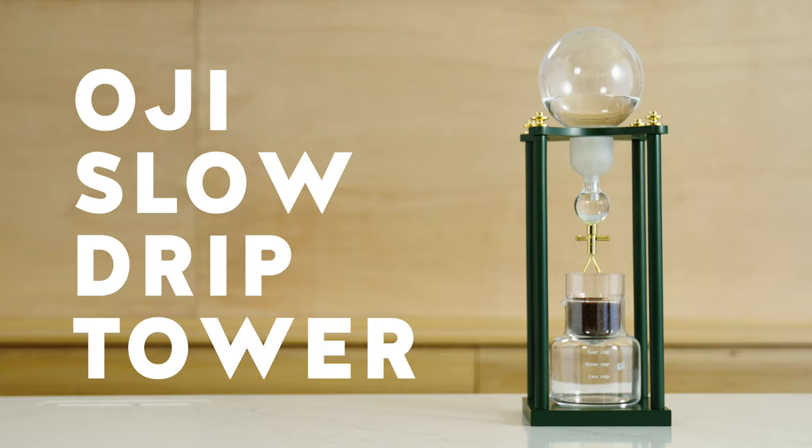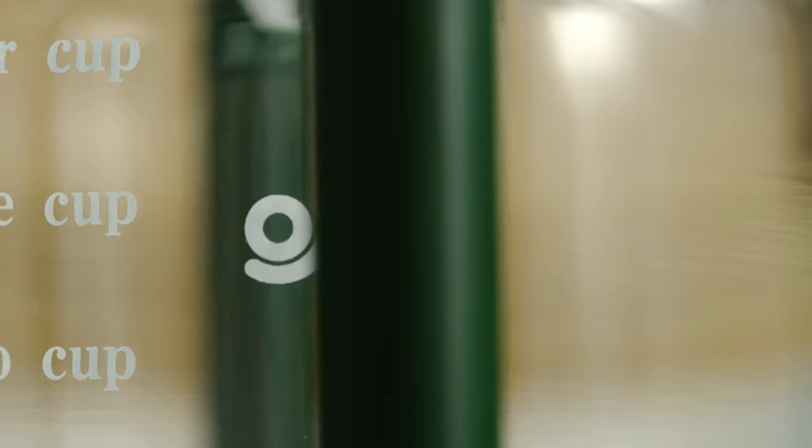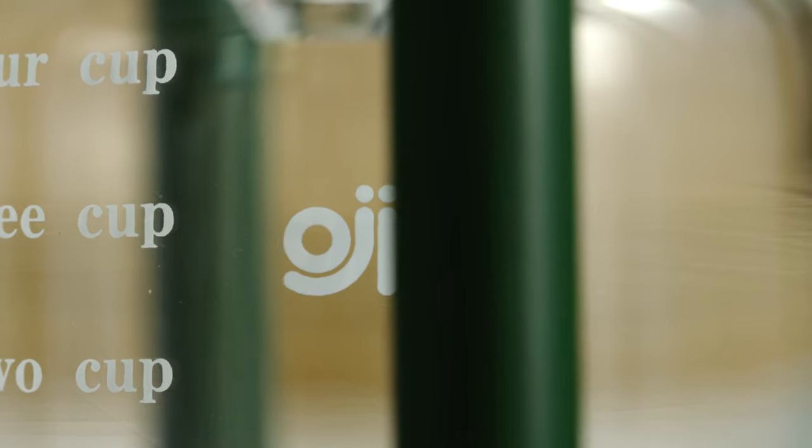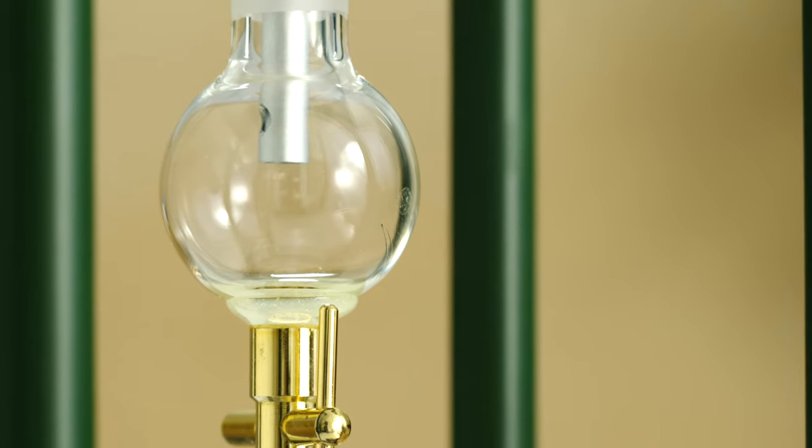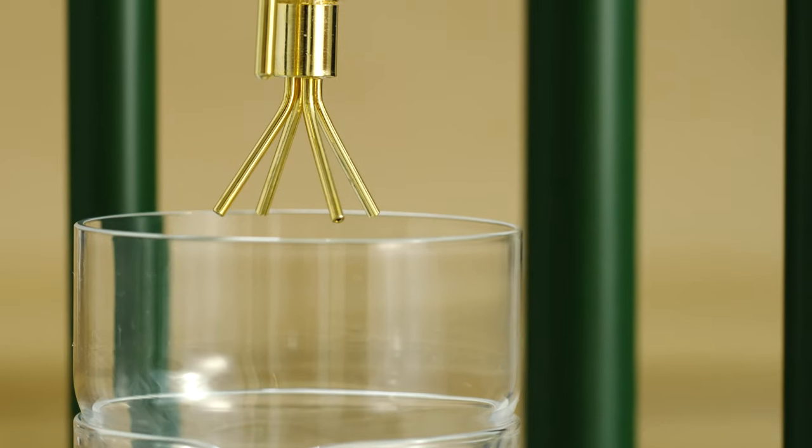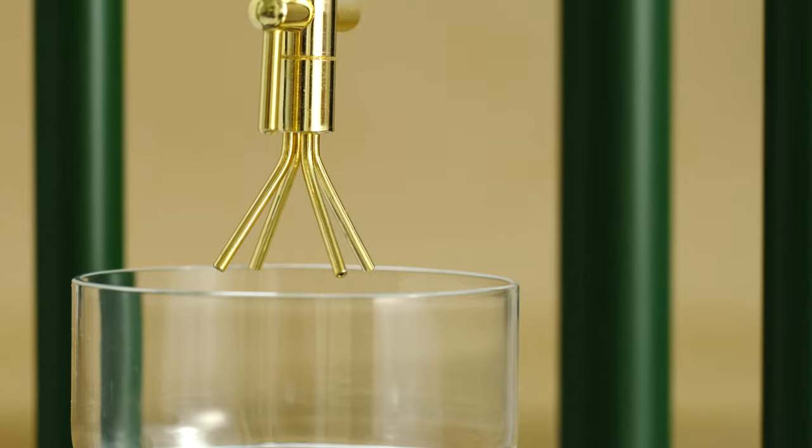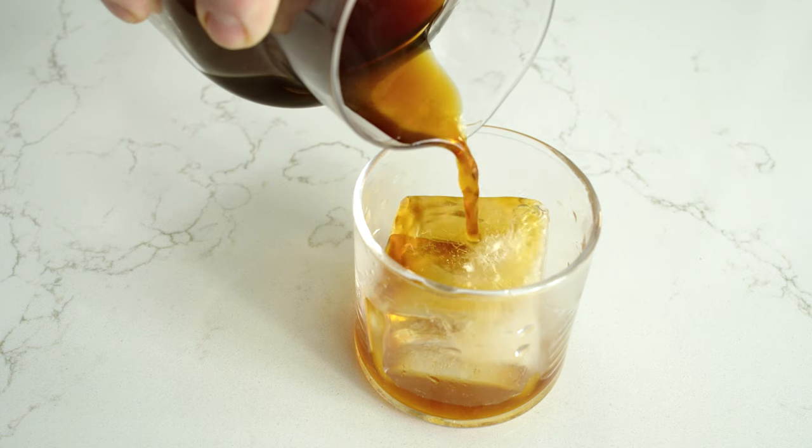The OG Slow Drip Brewer is a transcendent example of slow drip coffee. Its elaborate and beautiful glass tower slowly and precisely drips water onto ground coffee. This investment of time, energy, and attention is rewarded with a silky smooth yet eye-poppingly strong cold brew.